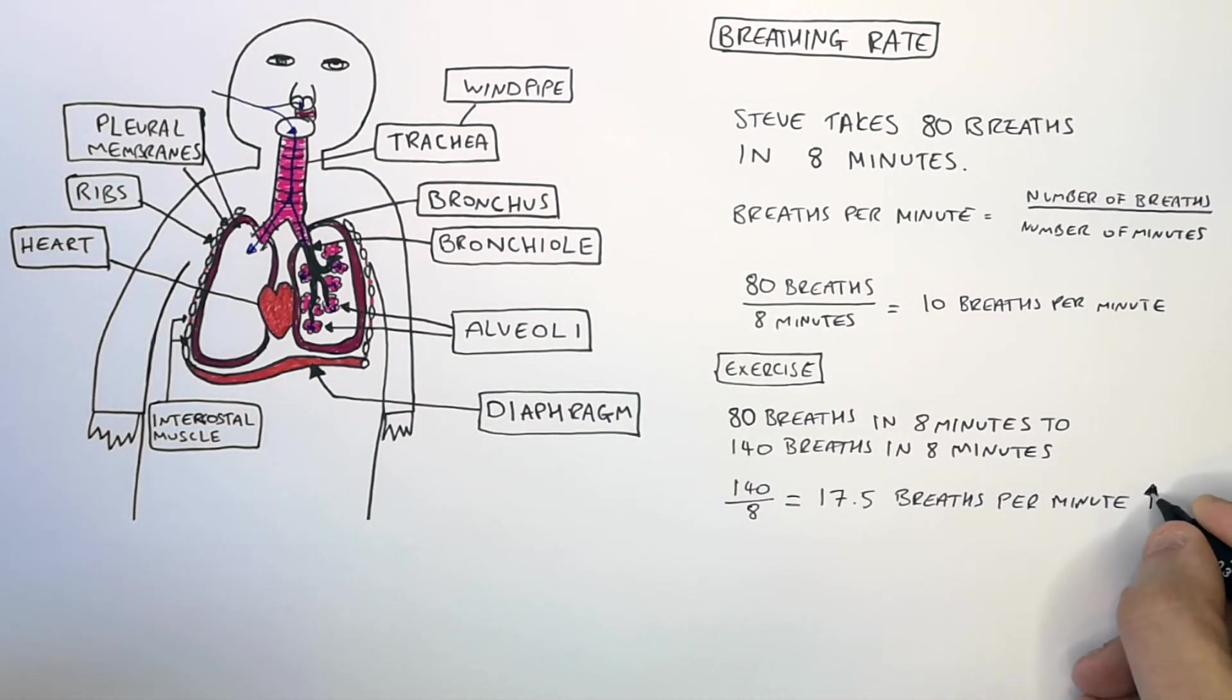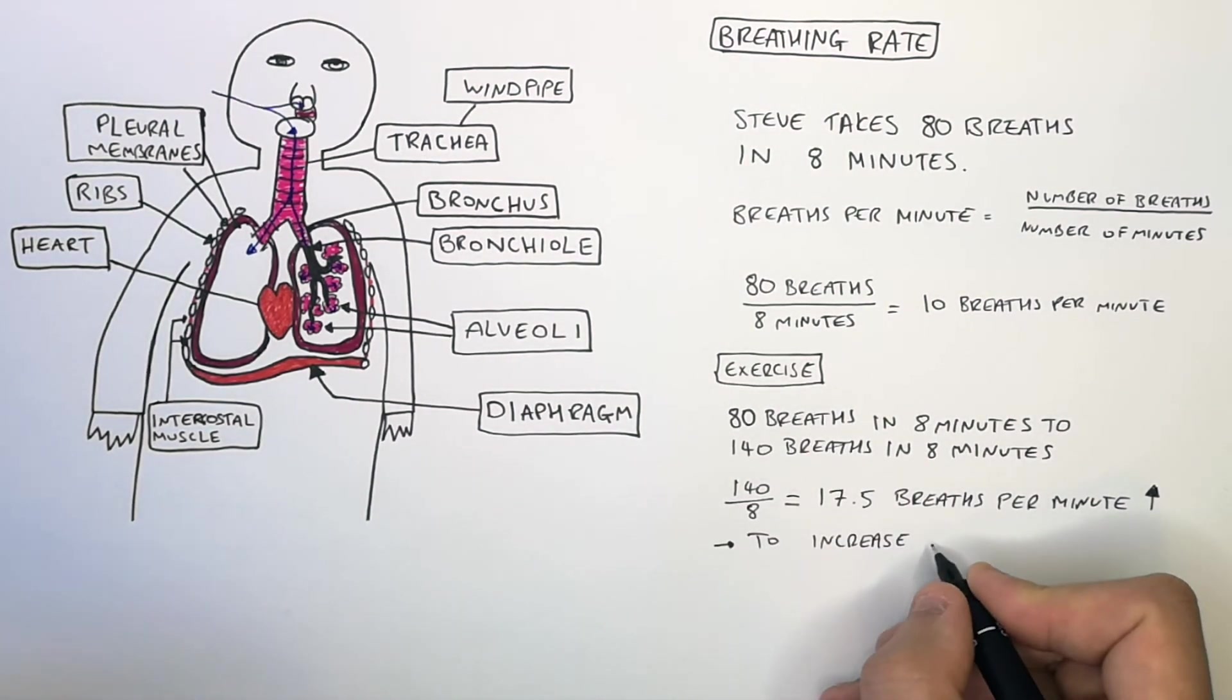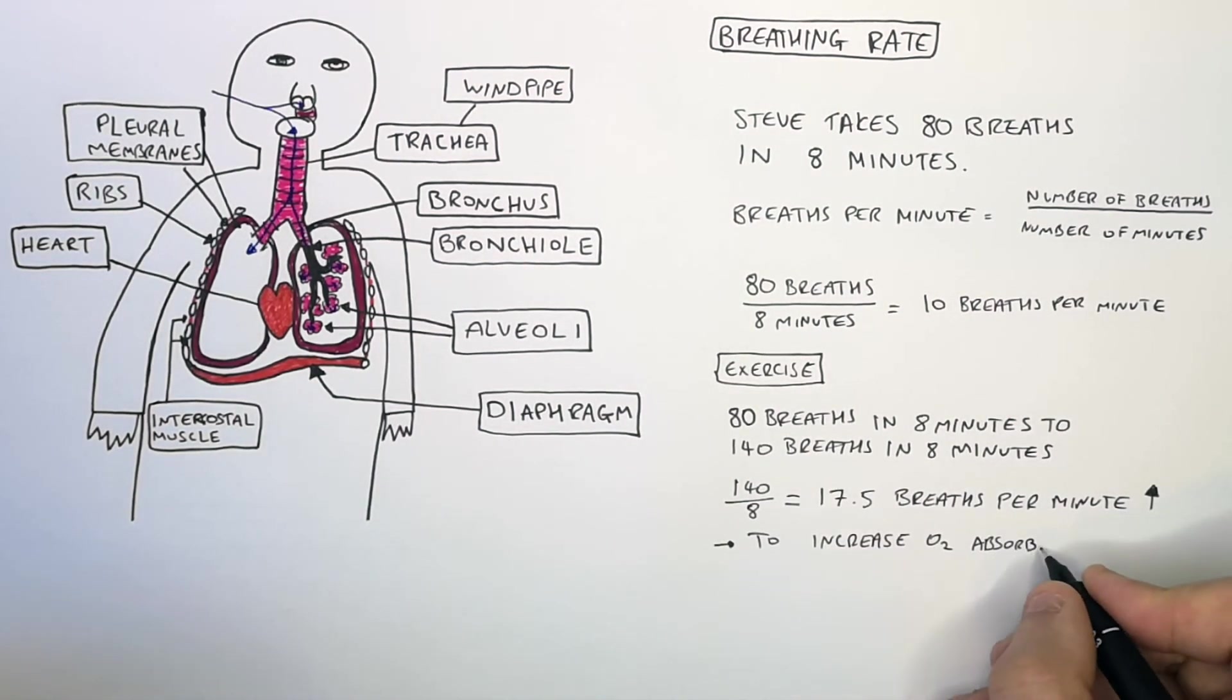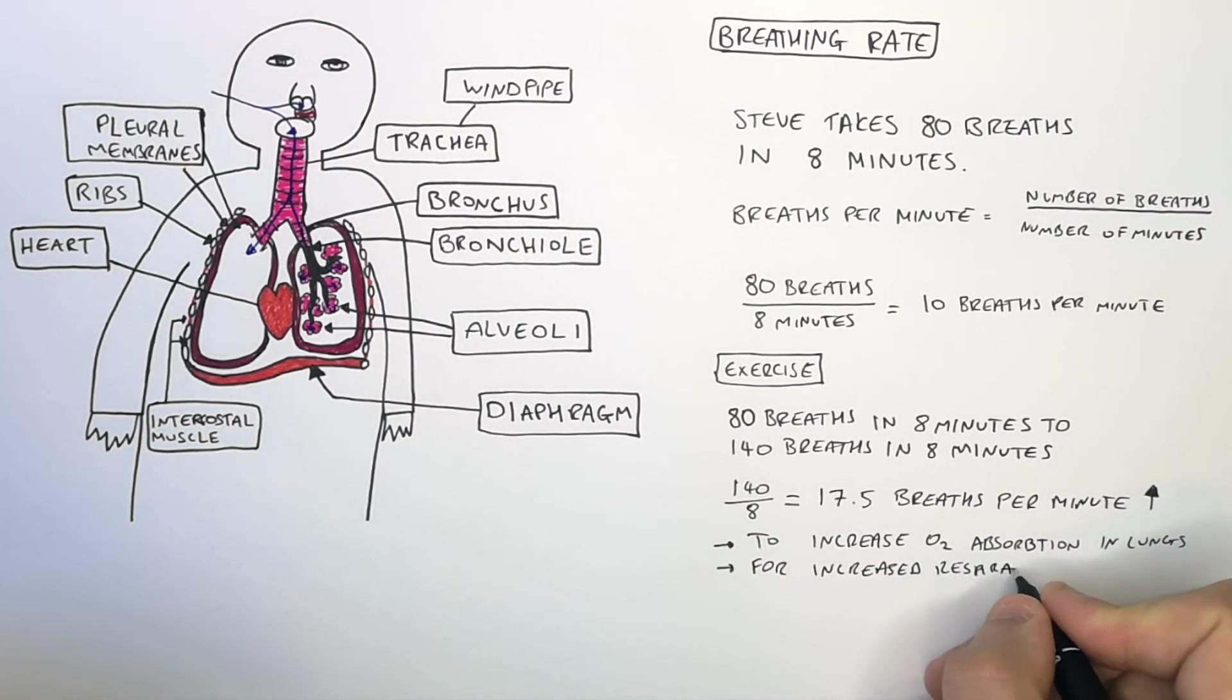So as you can see, his breathing rate went up during exercise. His breathing rate increased to increase oxygen absorption into the lungs, for increased respiration, and to release more energy.